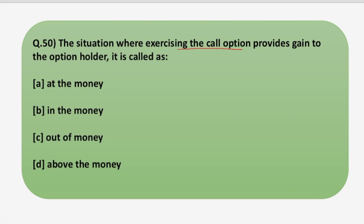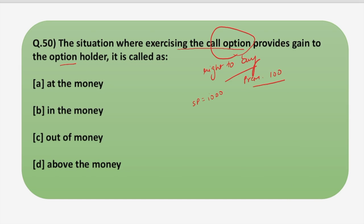The situation where exercising the call option provides gain to the option holder — it is called what? You must have read about call options in your financial management subject. A call option is basically the right to buy, and a person takes a call option only when he believes that in the future the price of the underlying stock may be more than the strike price. Buying a call option means the option holder may or may not exercise this right to buy a specific quantity at the strike price. For example, an investor has purchased a call option with a strike price of 1000 rupees and the premium he is paying is 100 rupees. This premium has to be paid whether he exercises the call option or not.